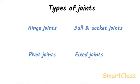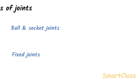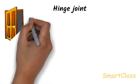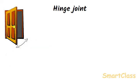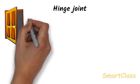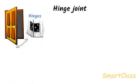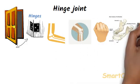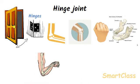A hinge joint works like a door hinge — when we open and close a door, it can move only forward and backwards because the door is joined to its frame by hinges, which allow movement in only one direction. Similarly, in our body, some bone joints move like a door on its hinges — they are called hinge joints. In our body, hinge joints occur at the elbow, knee, knuckles, and jaw. If we try to bend our elbow, we can bend it only in one direction.